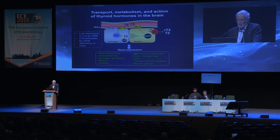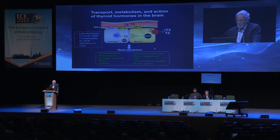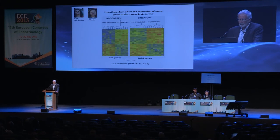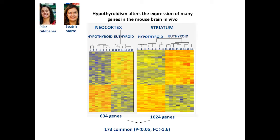Here we have some of our favorite genes: neurofilaments, semaphorins, selected proteins, reelin, CAMK4, and others. There are many genes regulated by thyroid hormone in development. These are studies performed over several years in our laboratory by Pilar Iglesias and Beatriz Morte, looking by microarray at how hypothyroidism alters gene expression in the mouse brain in the neocortex and the striatum.